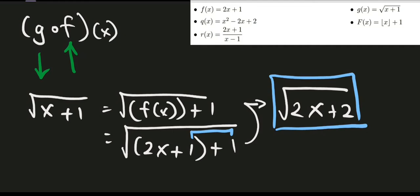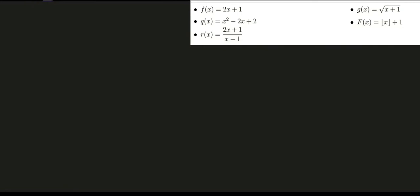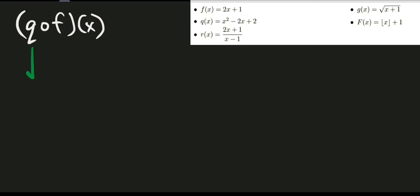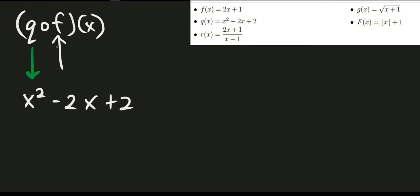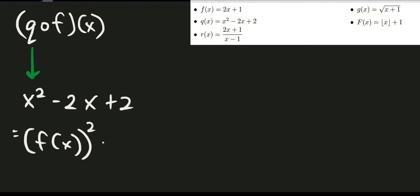Now let's solve another problem: q∘f(x). Same procedure — identify the first function and encode its content. We have q(x) = x² - 2x + 2. Then replace all the variables x with the second function f, giving us (f(x))² - 2·f(x) + 2.